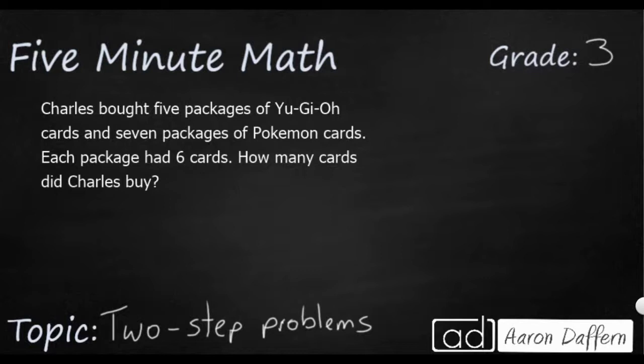So we have a simple word problem here on the screen, and we've got a few numbers hidden in the problem that are in word form rather than numerical form or standard form. But we have Charles. He's going to buy five packages of Yu-Gi-Oh! cards.